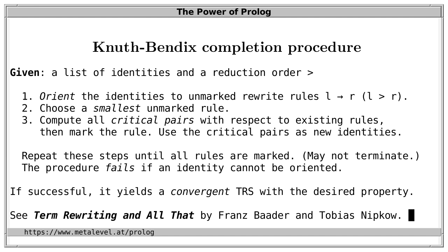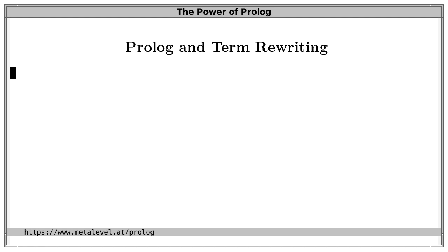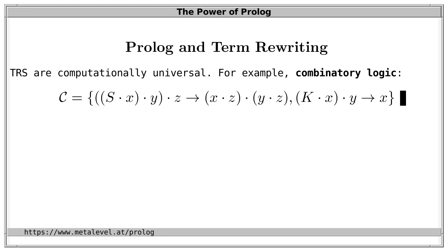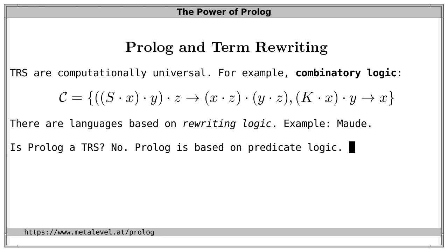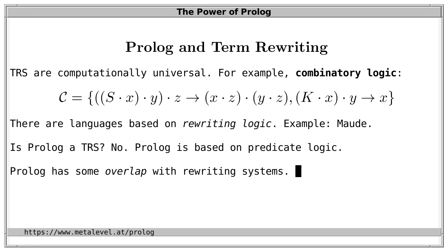What does Prolog have to do with term rewriting? First, like Prolog, term rewriting systems are computationally universal — every known computation can be expressed as a sequence of rewrite steps, rewriting a term representing the input to the intended result. For example, combinatory logic consists of exactly two rewrite rules and is computationally universal. There are even programming languages based on rewriting logic, such as Maude. Now, is Prolog a term rewriting system? No, because Prolog is based on predicate logic, not rewriting logic. However, there is clearly significant overlap between Prolog and rewriting systems.